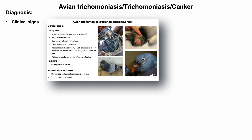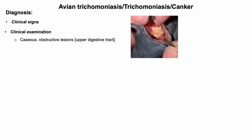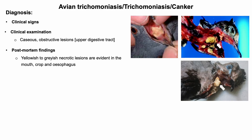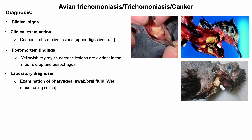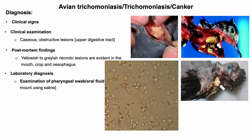For diagnosis of avian trichomoniosis or canker: clinical signs may help in diagnosis. Caseous obstructive lesions during examination of the oral cavity may confirm the disease. Note that this disease must be differentiated from pox virus infection and chlamydiosis, as similar types of lesions are observed. On post-mortem examination, yellowish to grayish necrotic lesions are evident in the mouth, crop, and esophagus. Laboratory examination of oral swabs reveals the live organism moving on the microscopic field.